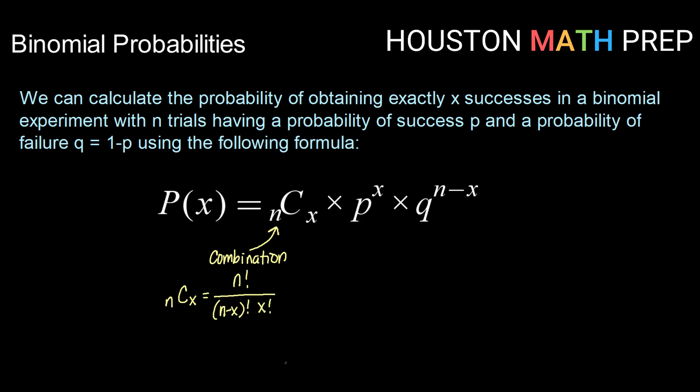That's our combination of how many ways we could get this outcome times p raised to the x power. Remember, p is your probability of success and x is your number of successes.